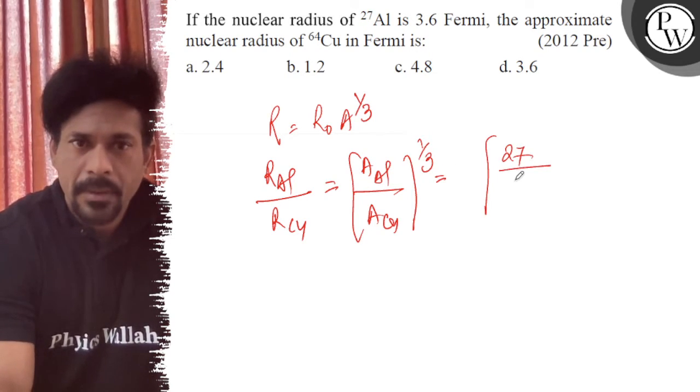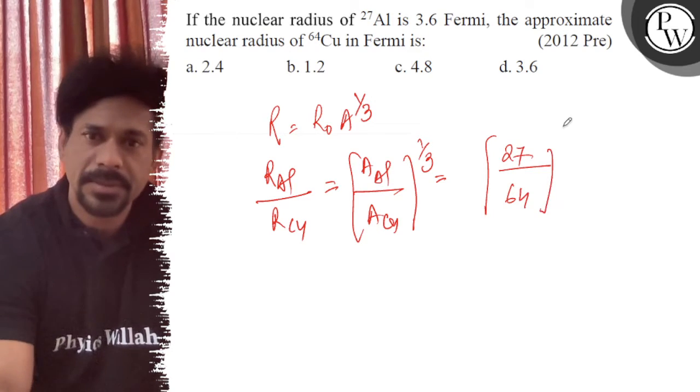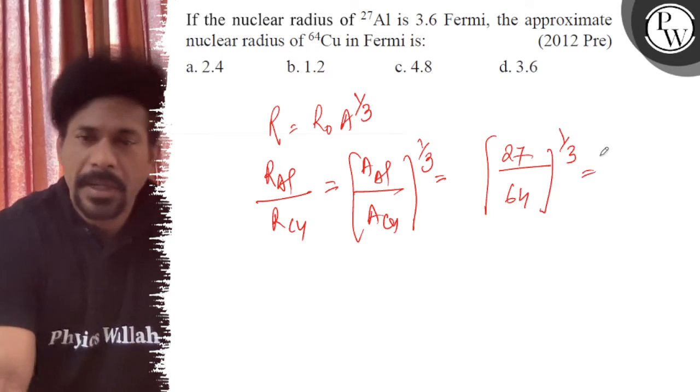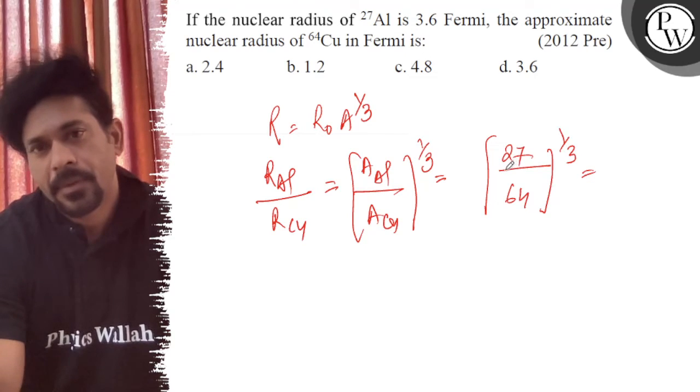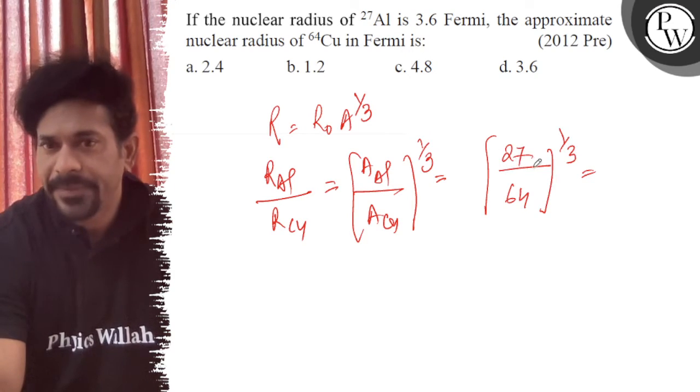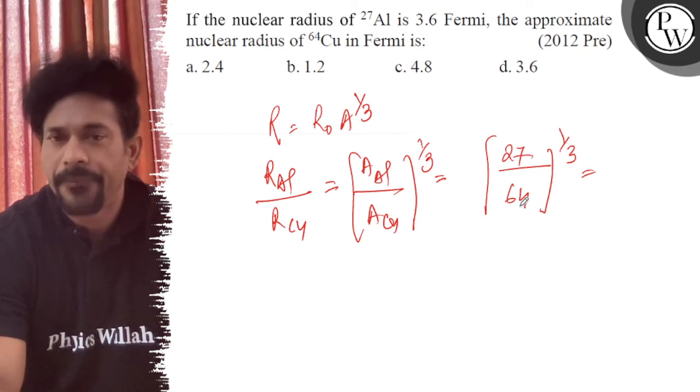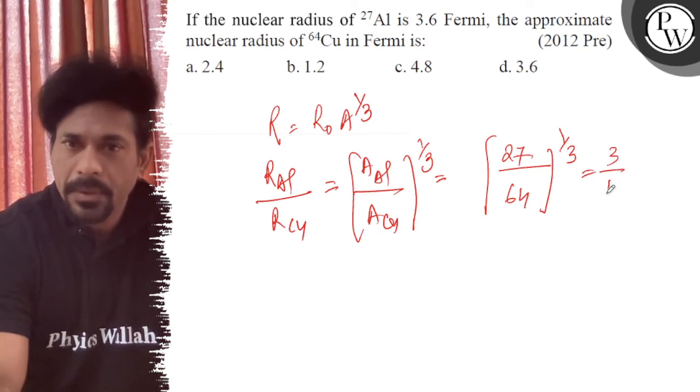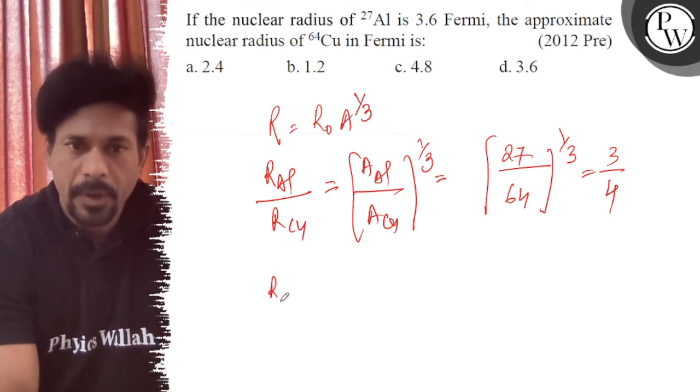I know that 3 cubed is 27, and 4 cubed is 64, so that's the perfect cube. So we get 3/4. So R of copper is 4/3 of R aluminum.